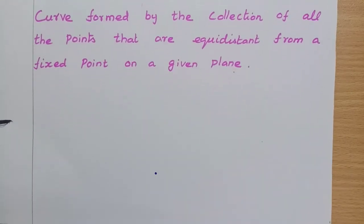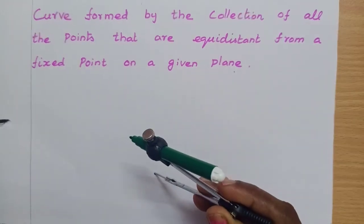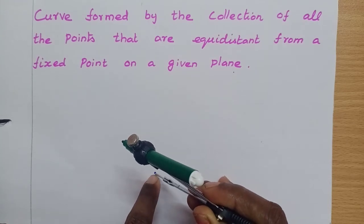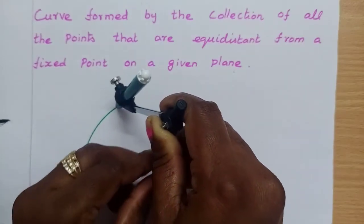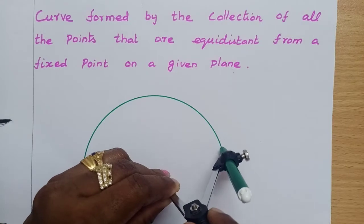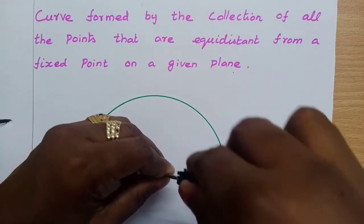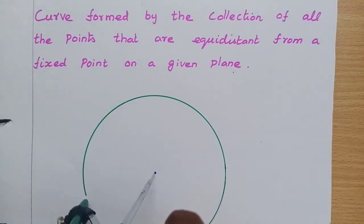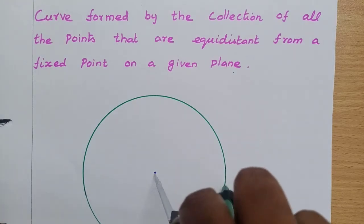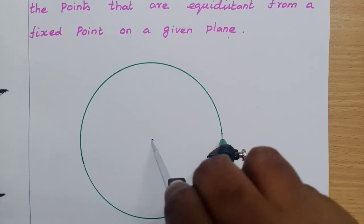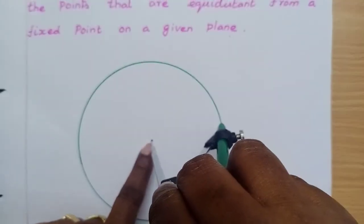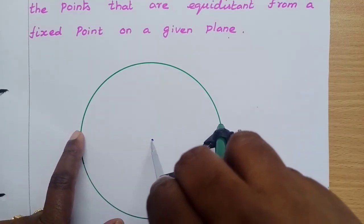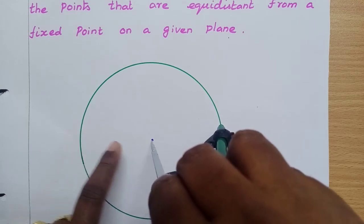So a circle is a collection of all points that are equal distance. This is the fixed point. Here there are points — a collection of points. These points are equidistant, meaning equal distance from the center point, the fixed point. There are many points, and the distance between the fixed point and the point on the circle are equal.